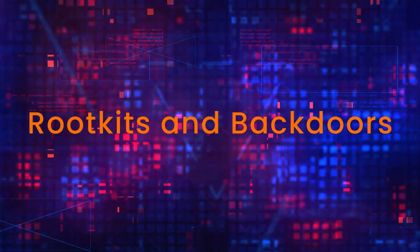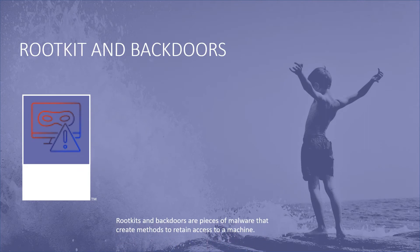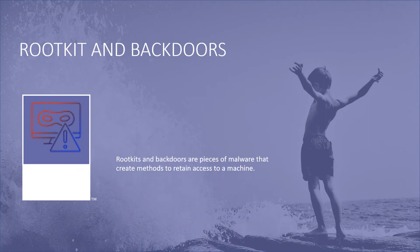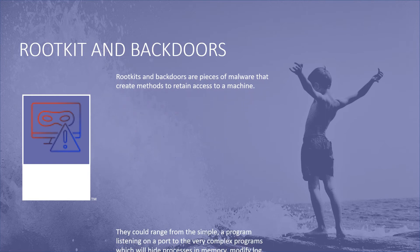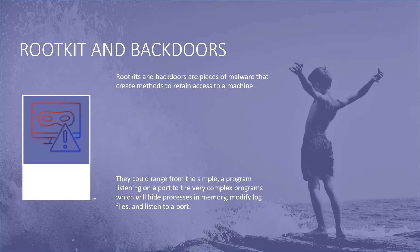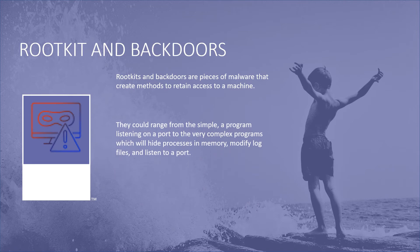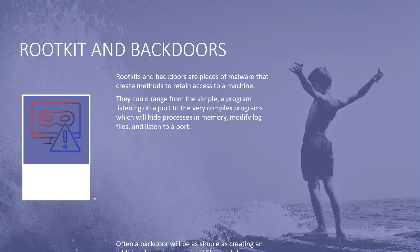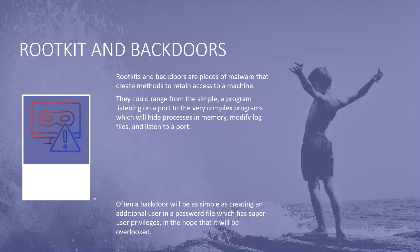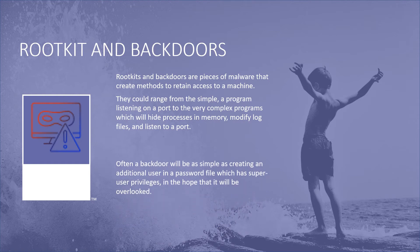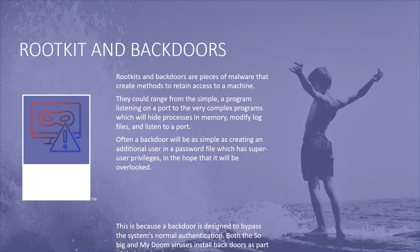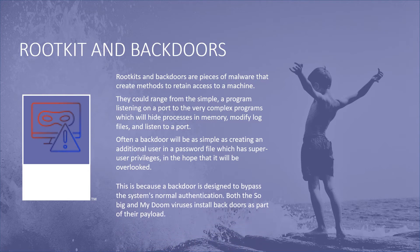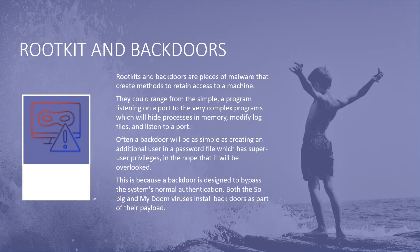The fourth type is rootkits and backdoors. Rootkits and backdoors are pieces of malware that create methods to retain access to a machine. They could range from the simple — a program listening on a port — to very complex programs which will hide processes in memory, modify log files, and listen to a port. Often a backdoor will be as simple as creating an additional user in a password file which has super user privileges, in the hope that it will be overlooked. This is because a backdoor is designed to bypass the system's normal authentication.